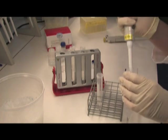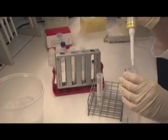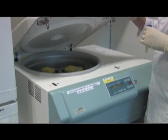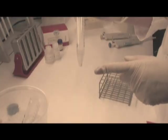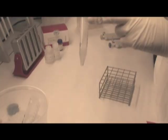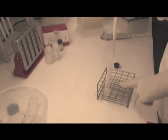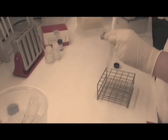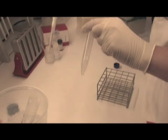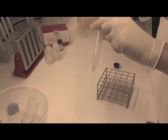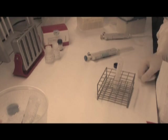Add 2 mls of the cold isolation buffer followed by centrifugation for 8 minutes at 350 G. Notice the nice pellet. Discard the supernatant and resuspend the cell pellet in your preferred buffer. Store the cells at 2 to 8 degrees Celsius until further use.